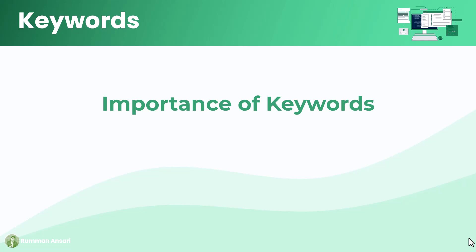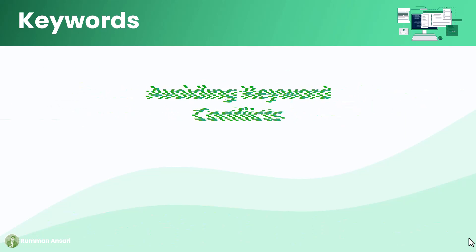One may ask: if I give an identifier the same name as a keyword, what problem will occur? To answer that — since keywords are reserved, it's crucial to avoid using them as identifiers. Using a keyword as an identifier can lead to a syntax error or unexpected behavior. So always choose meaningful names for your variables, functions, and classes instead of using keywords.